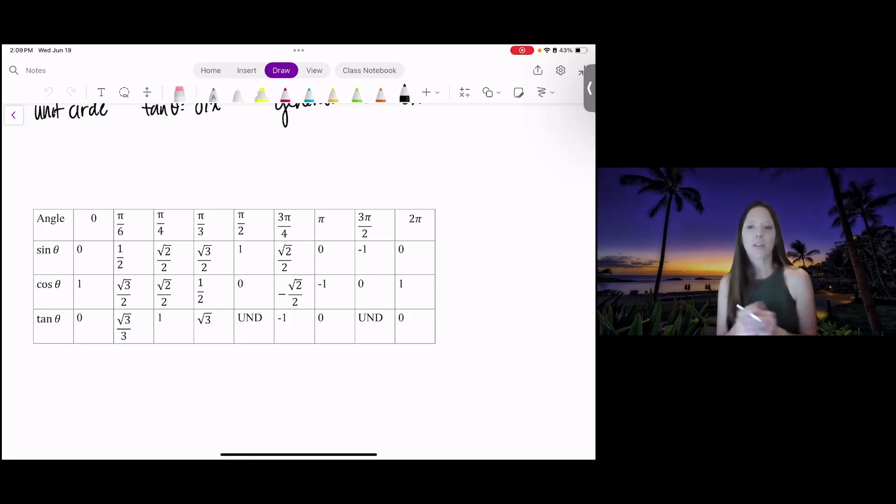Notice that sine for all values of x takes on some y value. There's not any issues. But for tangent, because you're talking about y over x, and sometimes x can be 0, we have undefined.